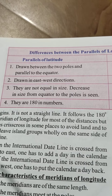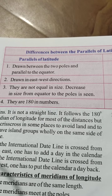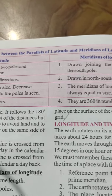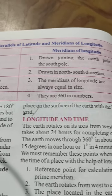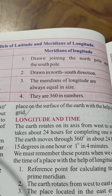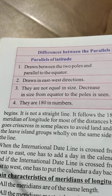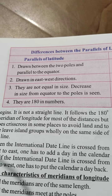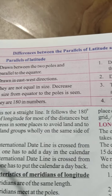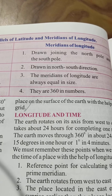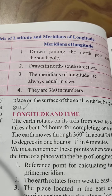Point 3: Parallels of latitude are not equal in size — they decrease in size from the equator to the poles. Whereas meridians of longitude are always equal in size. Point 4: Parallels of latitude are 180 in number, whereas meridians of longitude are 360 in number.